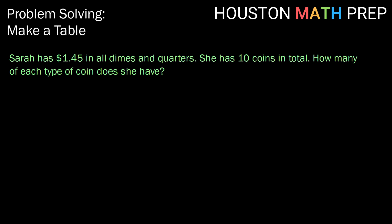First, let's read through our question. Sarah has $1.45 in all dimes and quarters. She has 10 coins in total. How many of each type of coin does she have?